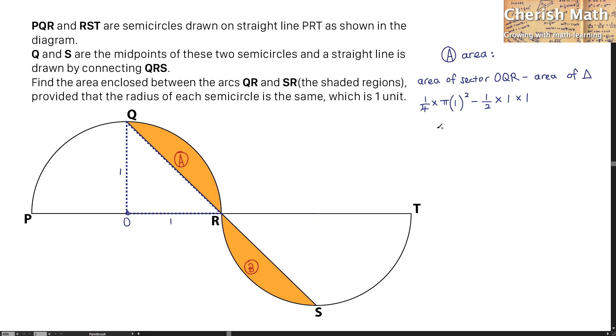The value I'm getting here is one quarter pi minus one half as the area of region A.